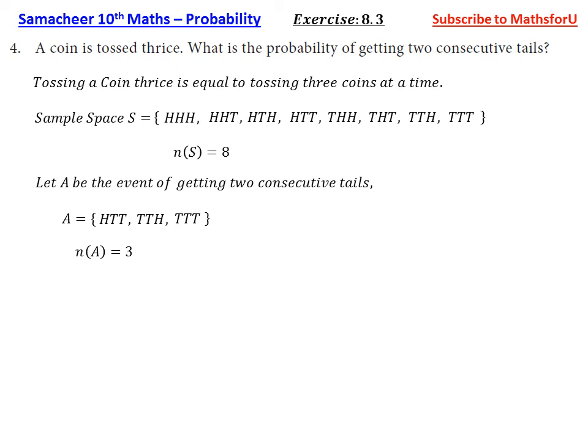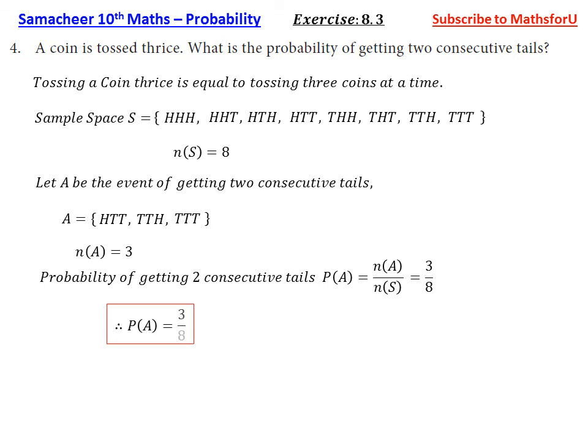P of A, probability of getting two consecutive tails, is equal to n of A by n of S. But n of A was three, n of S was eight. So three by eight is the answer. Therefore, P of A is equal to three by eight.